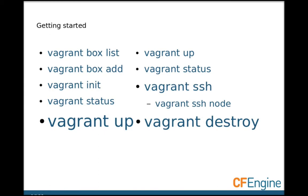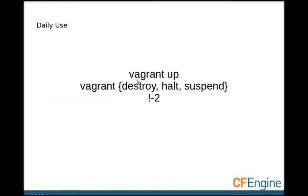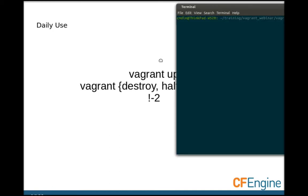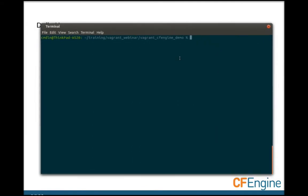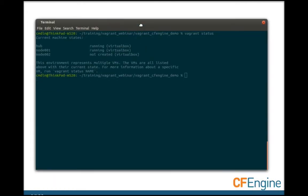Getting started with Vagrant is pretty easy. These are most of the commands you would use for daily use: vagrant up, and then some form of a stop command. Destroy will remove the Vagrant environment and all the VMs; halt will just shut them down; and suspend will just suspend them. From any of these previous states, if you run vagrant up it will either recreate the environment, boot up the machine, or unsuspend the machine. I've already got a Vagrant environment up and running with two hosts running and one that's not yet started.